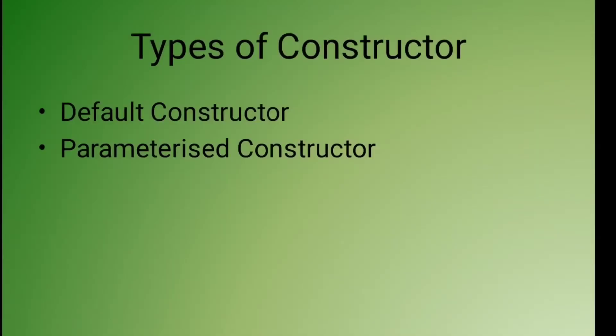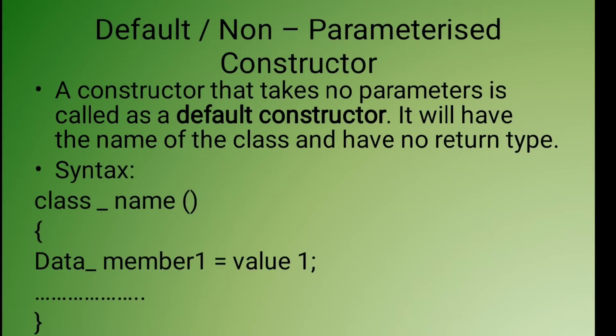We mostly have two types of constructors. First is the default constructor and second is the parameterized constructor. Default constructors are those that take no parameters — they have the name of the class and no return type. Let's understand the default constructor with the help of a program.